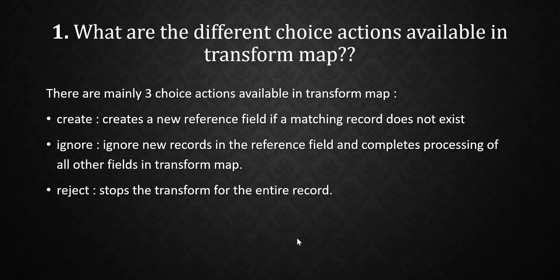There are three main choice actions available in transform map: create, ignore, and reject. Once you say these three, the interviewer may follow up asking what is the use of ignore, create, or reject individually, so that's why I've written a little definition for each.